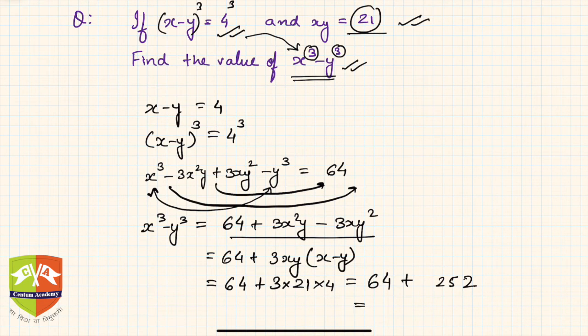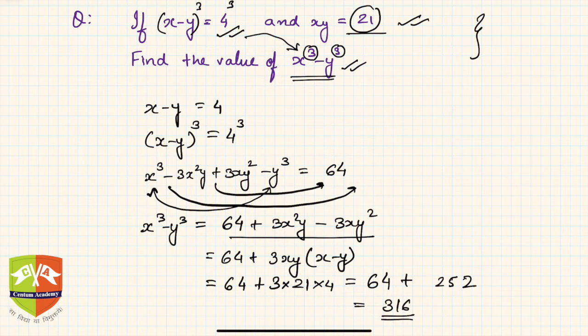Hence the value will be nothing but if you add both of them you'll get 316. So this should be the answer - x cube minus y cube should be 316. So the learning is the indication we went by, or the feel which was coming.